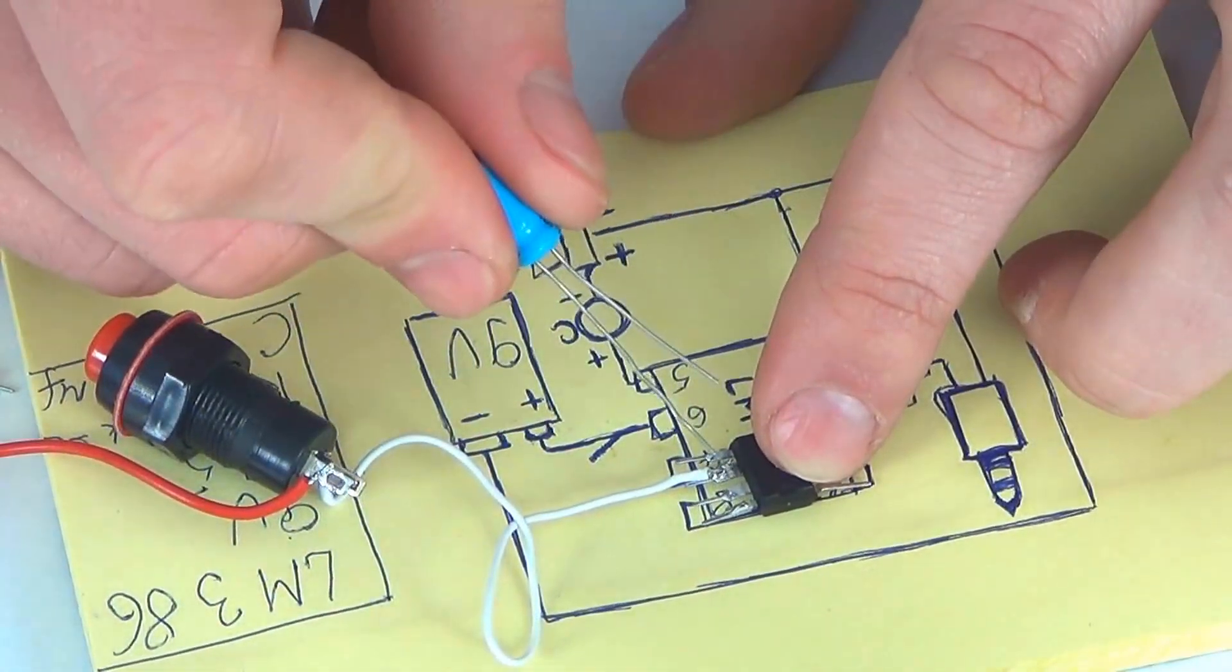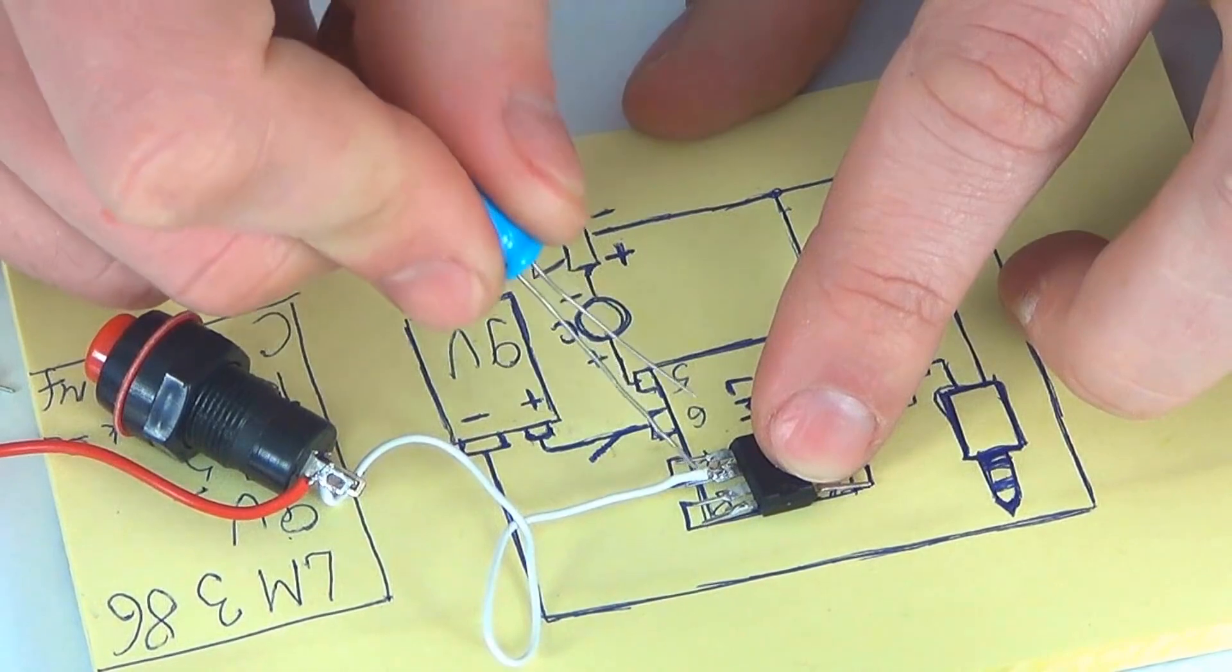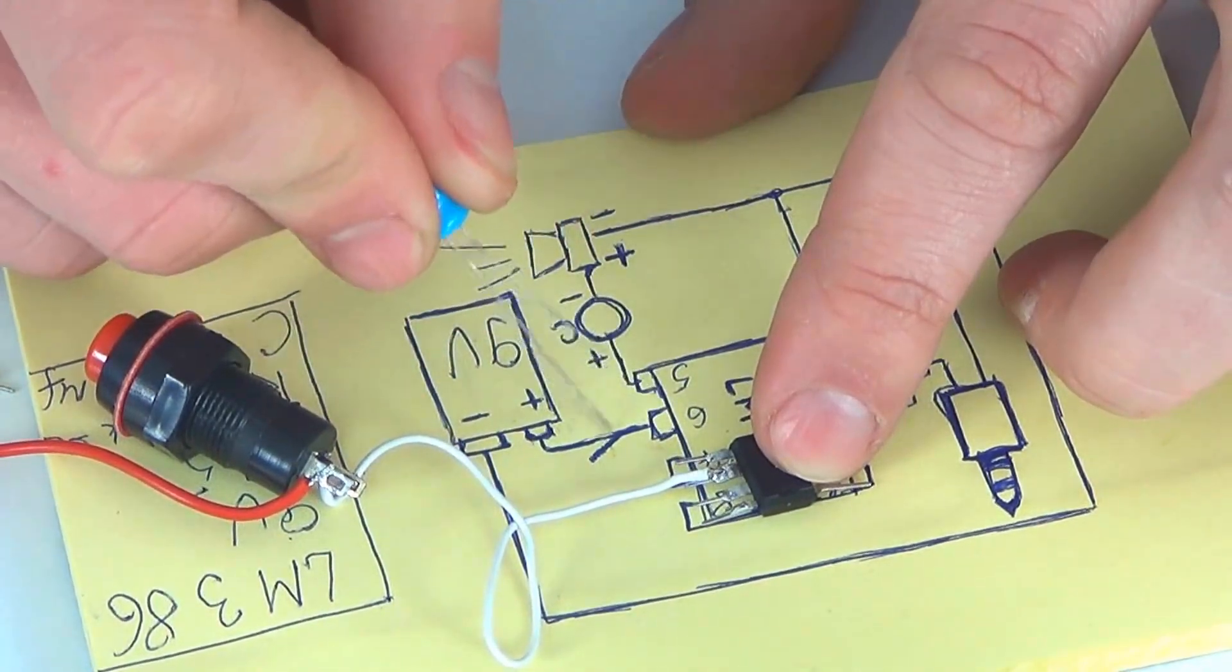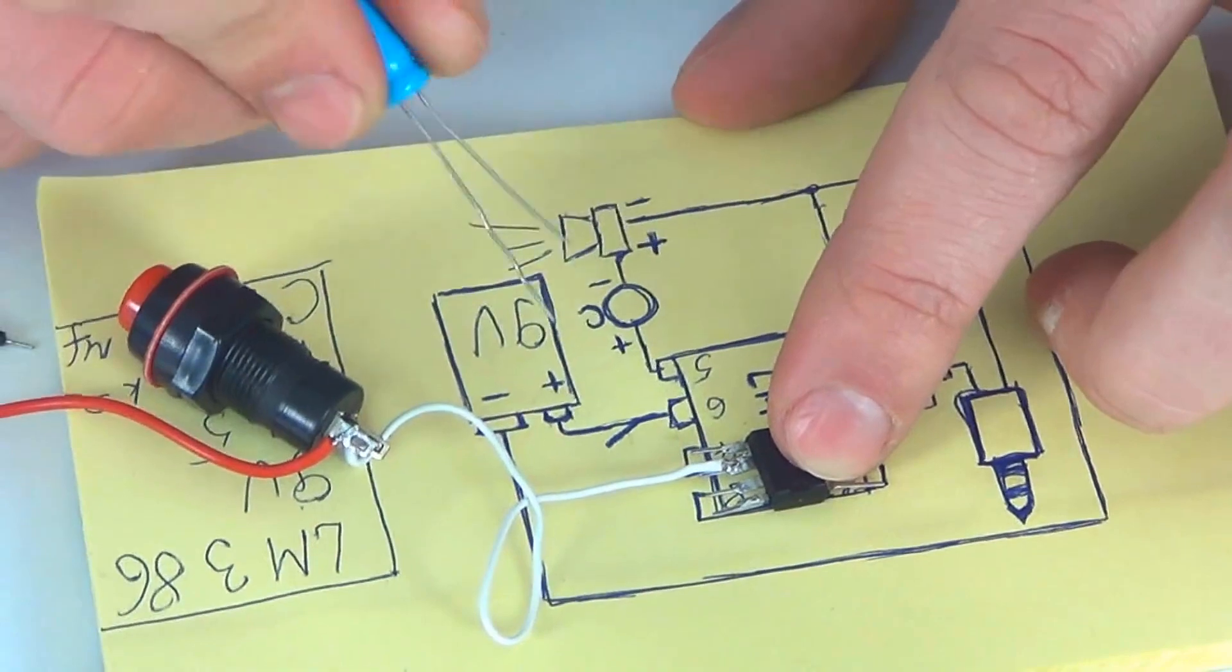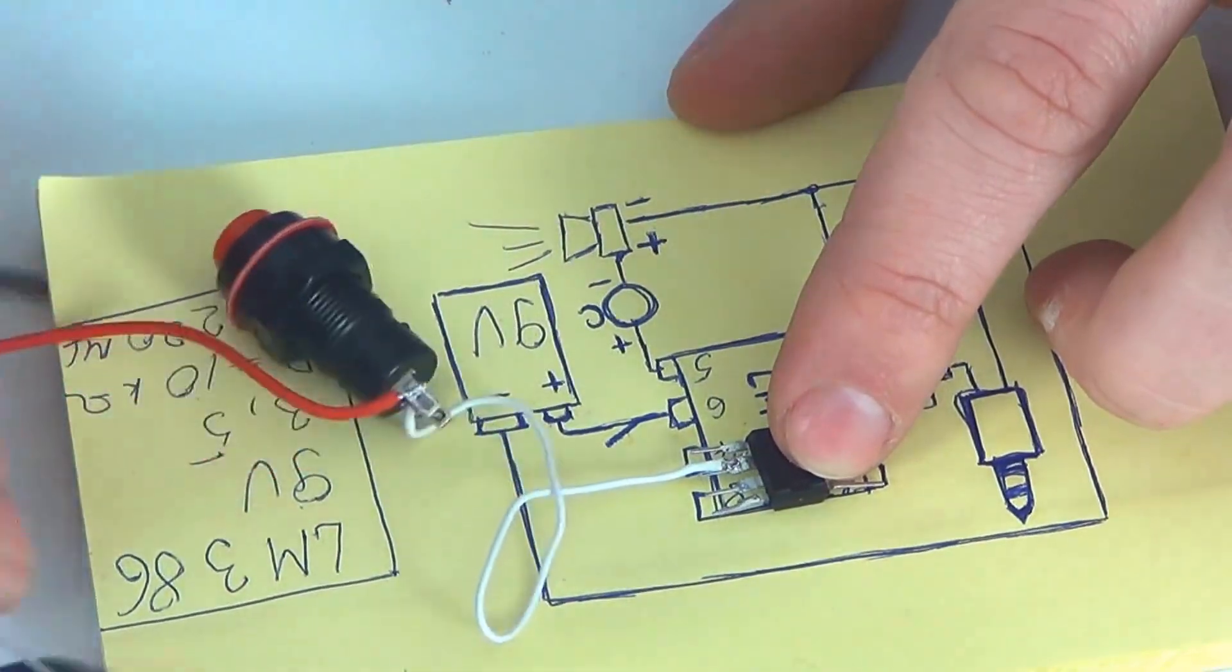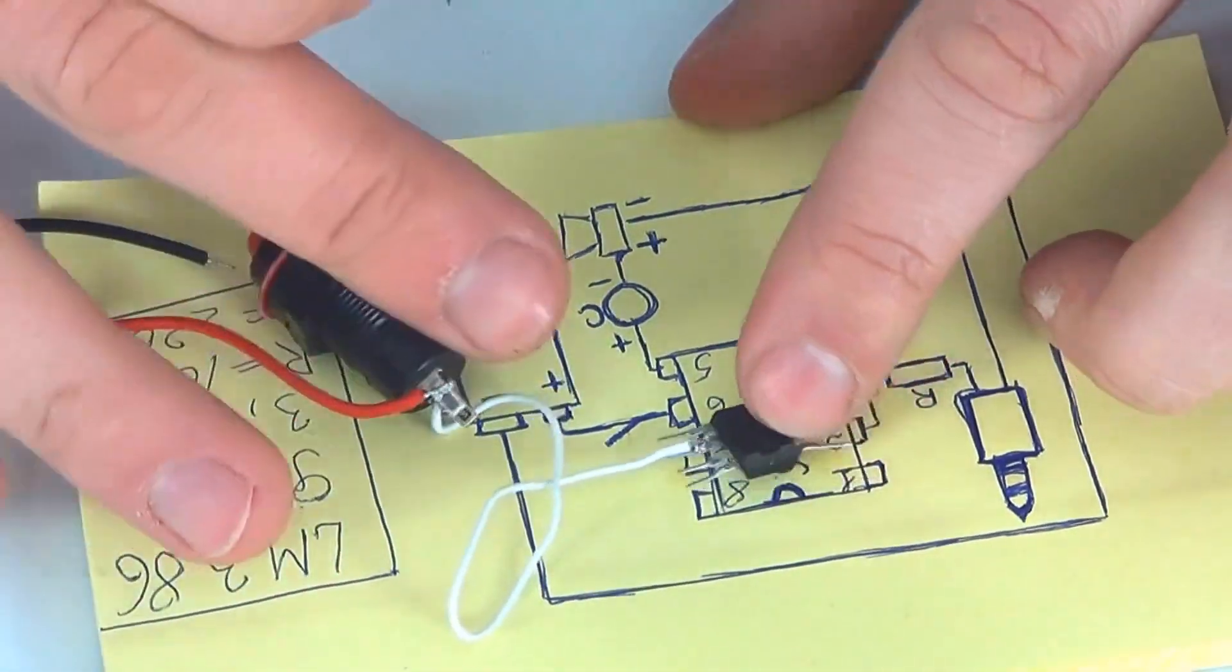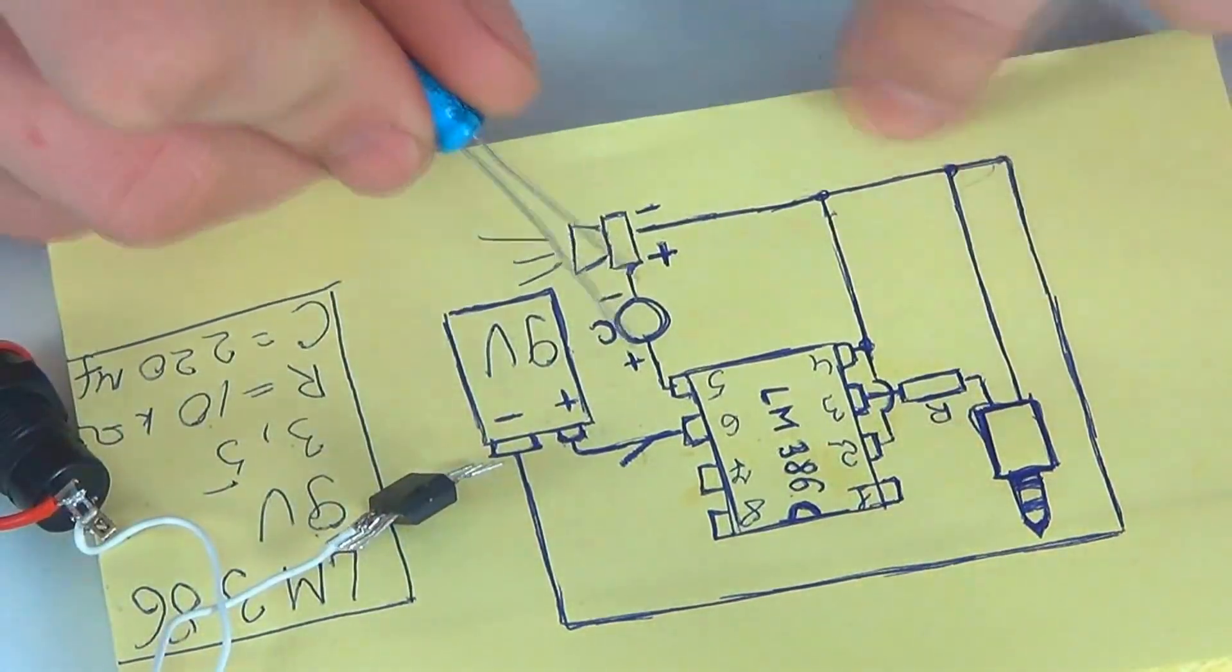The first stage is done. Let's see what we did so far. We soldered a wire from the sixth contact through the switch to the plus from the battery connector. Now we move to the next stage.